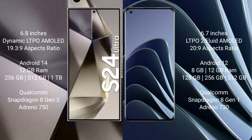Samsung Galaxy S24 Ultra comes with 12GB RAM and 256GB, 512GB, or 1TB internal storage, with a Qualcomm Snapdragon 8 Gen 3 processor and Adreno 750 GPU. OnePlus 10 Pro comes with 8GB or 12GB RAM and 128GB, 256GB, or 512GB internal storage, with a Qualcomm Snapdragon 8 Gen 1 processor and Adreno 730 GPU.